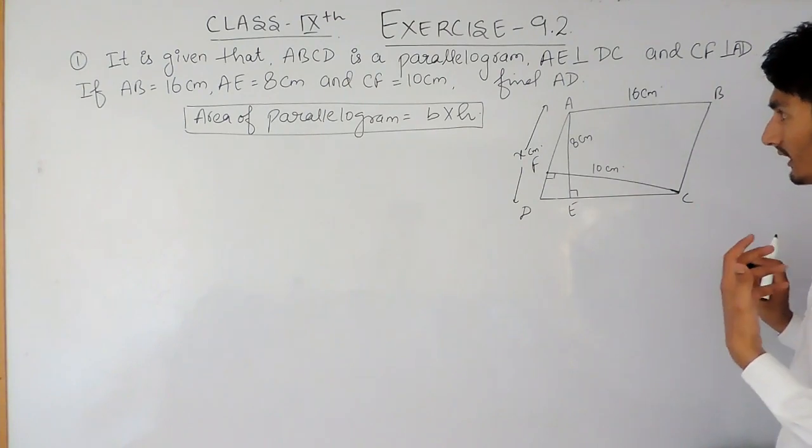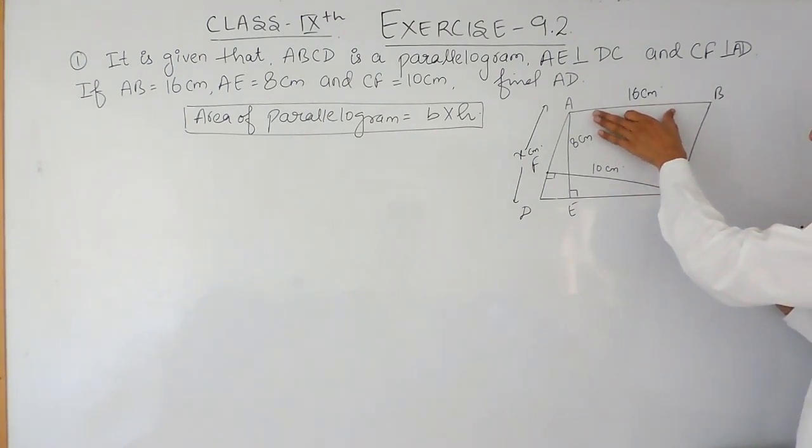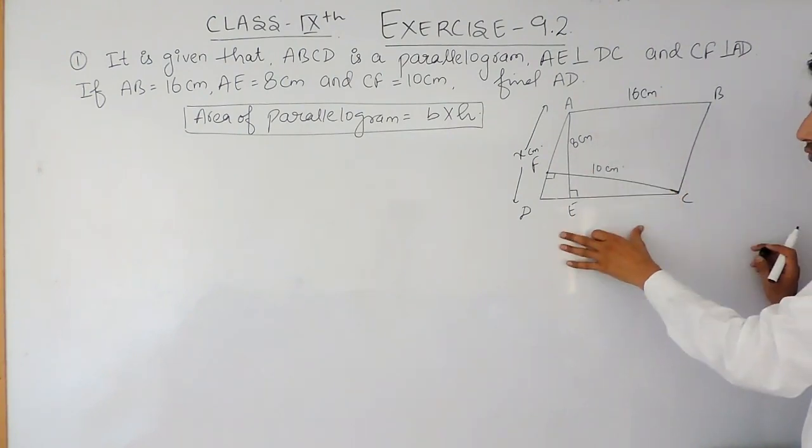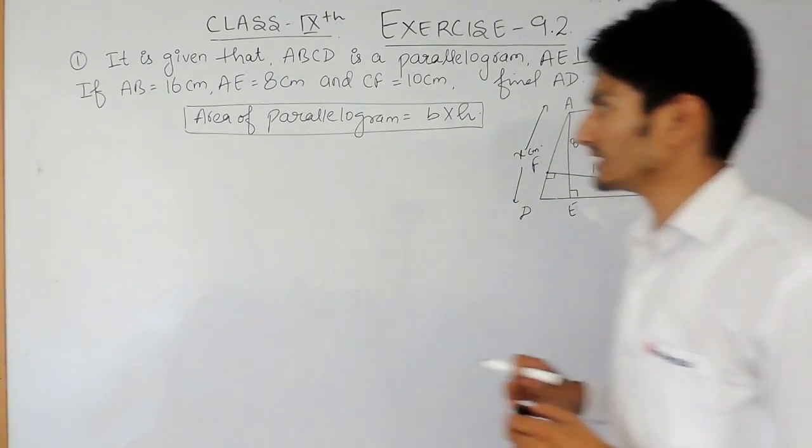Okay, now first of all, the opposite sides of a parallelogram are equal, so AB equals to DC is equals to 16 cm.